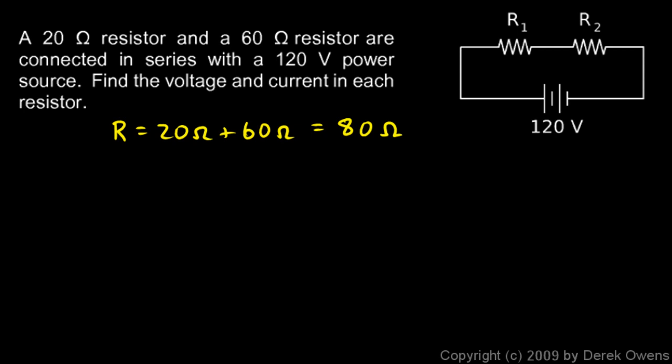Now I can use the total R to find the total current. I will be V over R, that's 120 volts over 80 ohms. That comes out to 1.5 amps. So that's the current coming out of the battery here. That's my total I is 1.5 amps. Now because they're in series, that's the same current that goes through here. I1 is also 1.5 amps and I2 is also 1.5 amps.